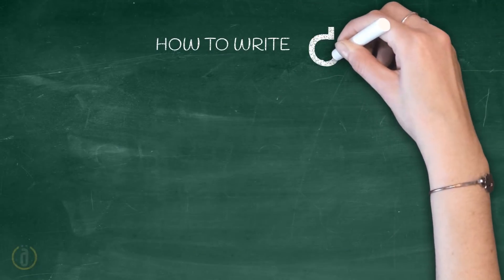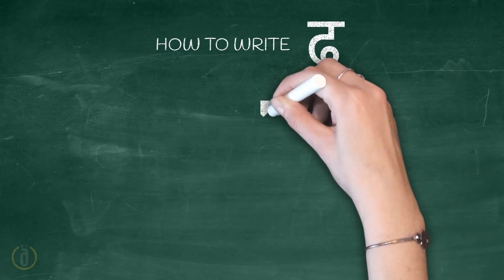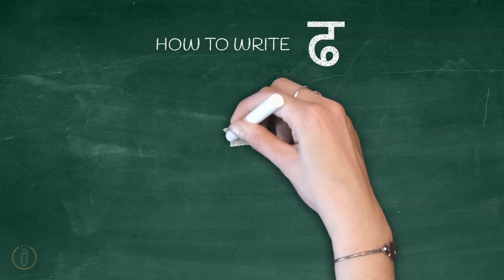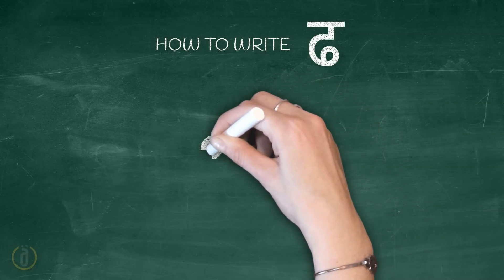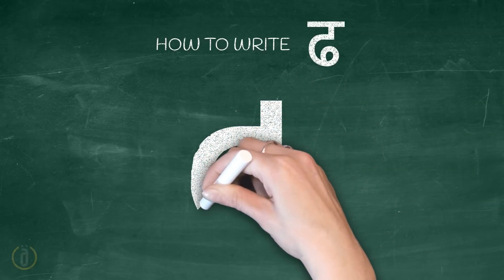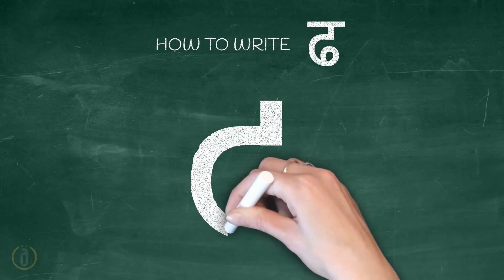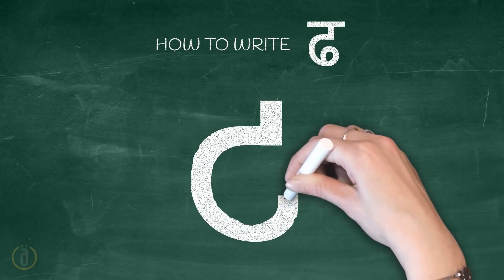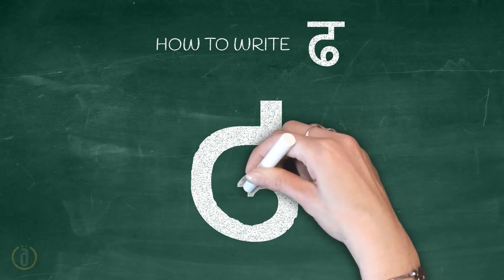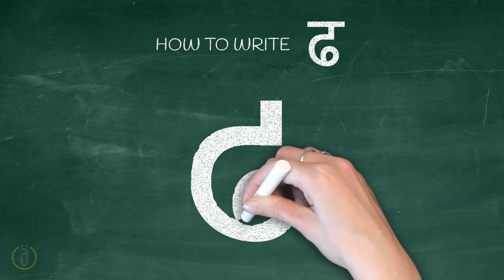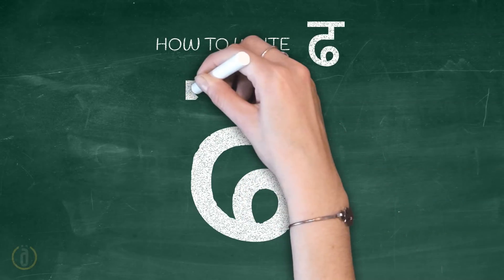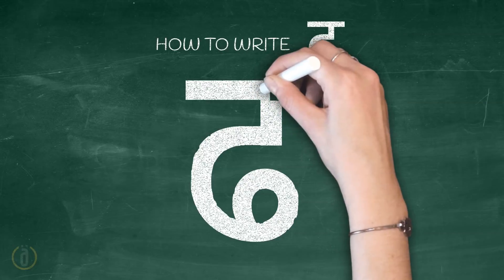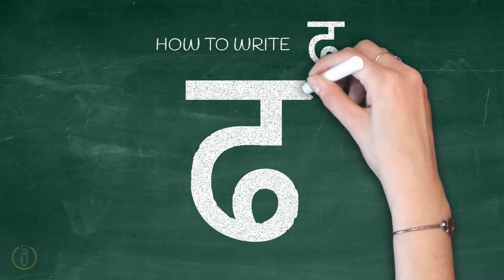How to write Dha: begin with a small standing line, connected to that draw a semicircle and make a loop as shown, then finally draw a sleeping line on the top.